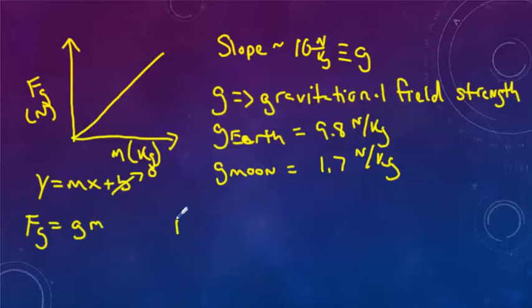So rearranging this, it's typically expressed as F_g equals m times g. So if you want to find the weight of something, you take the mass in kilograms and multiply it by the gravitational field strength of the surface that you're on.